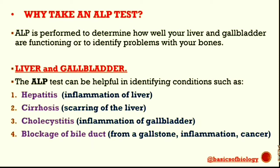Checking alkaline phosphatase levels in the blood is a routine part of liver function and gallbladder tests. Symptoms such as jaundice, abdominal pain, nausea, and vomiting may lead your doctor to suspect something is wrong with your liver or gallbladder. The alkaline phosphatase test can be helpful in identifying conditions such as hepatitis (inflammation of the liver), cirrhosis (scarring of the liver), cholecystitis (inflammation of the gallbladder), and blockage of bile ducts from a gallstone, inflammation, or cancer.